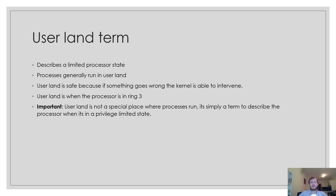Userland is safe because if something goes wrong the kernel is able to intervene. For example, if I do something I'm not supposed to, it generates a protection fault and the protection fault interrupt handler is invoked. The kernel is then expected to handle that exception by terminating the offending process. Userland is not a special place where processes run — it's simply a term to describe the processor when it's in a privilege-limited state.